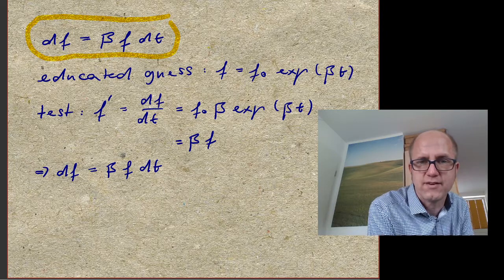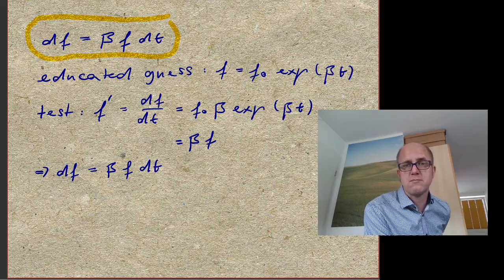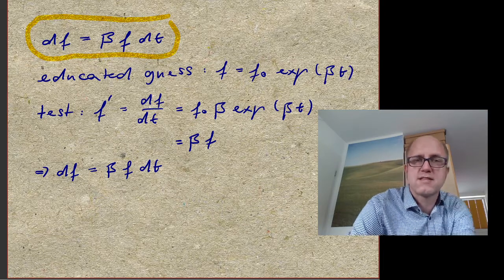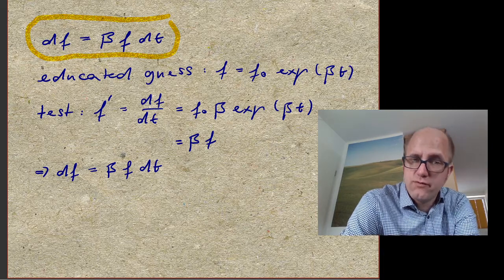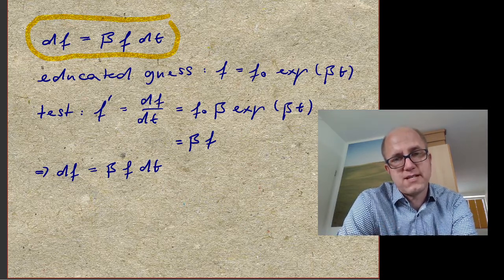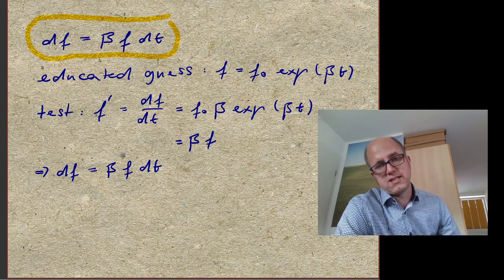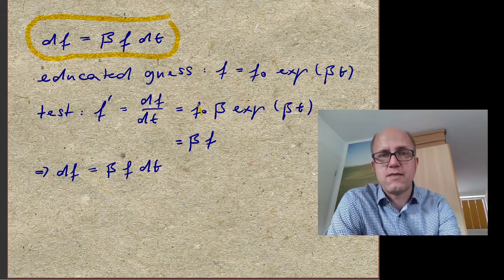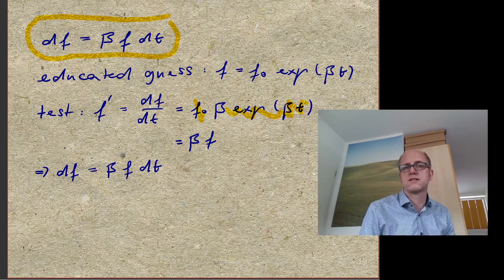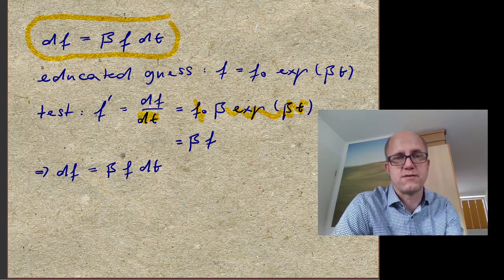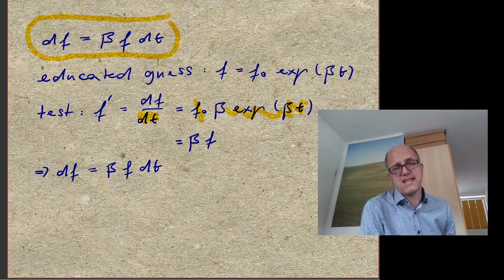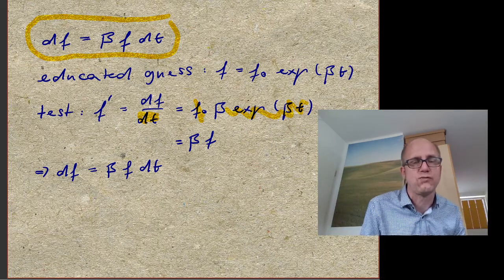We already know that the exponential function is a solution, so let's make an educated guess: f equals f-zero times e to the power of beta times t. Now we just check — we take the derivative df/dt, which equals f-zero times beta times e to the power of beta times t, which equals beta times f. Multiplying both sides by dt gives df equals beta times f times dt, which is exactly our differential equation. So we've solved it.